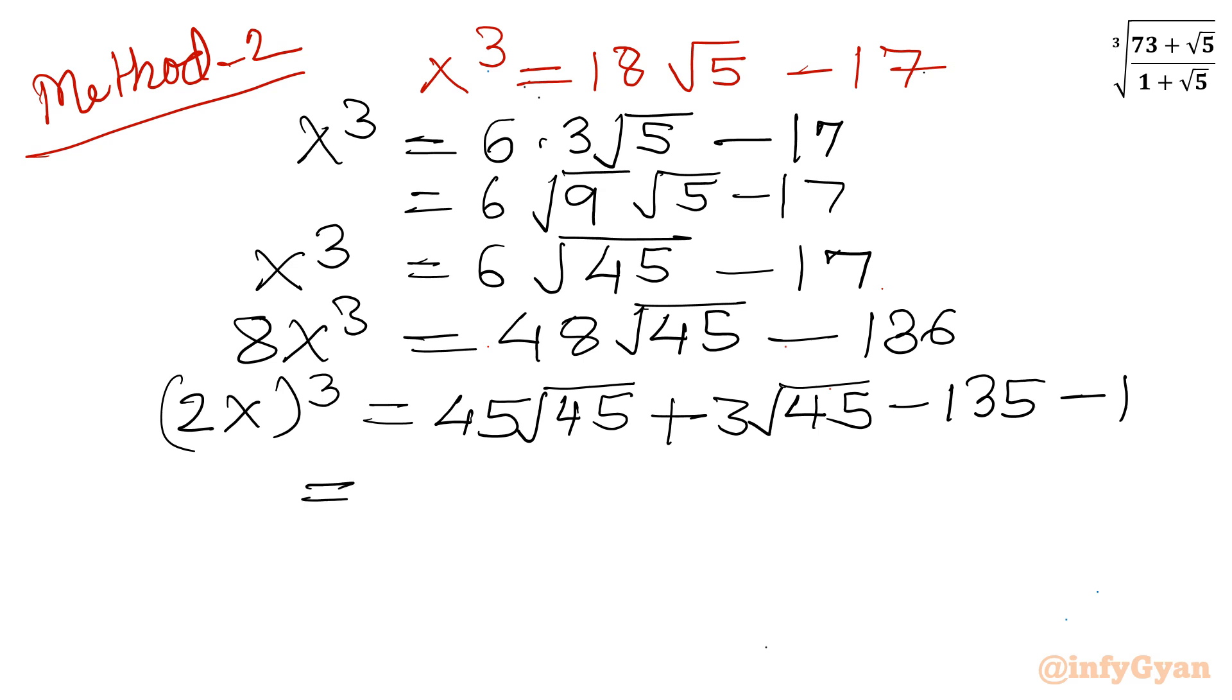Now can we write 45 root 45 as root 45 whole cube? And if we write here 3 times a square b with negative sign as per the formula, plus 3ab square, so 3ab square is 3 times 2 times 1. Now see, it is matching. So this is nothing but root 45 minus 1 whole cube in the RHS.